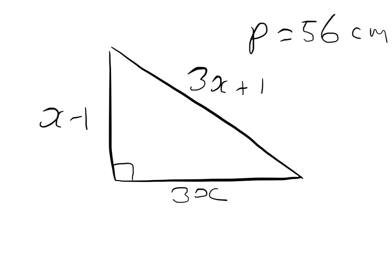So in this problem, we're given a triangle, and we're told its perimeter is 56 centimeters. We're given the side lengths in terms of x: x minus 1 is the height, 3x is the base, and 3x plus 1 is the longest side, the hypotenuse. So with this information, we've got to find the area of the triangle.